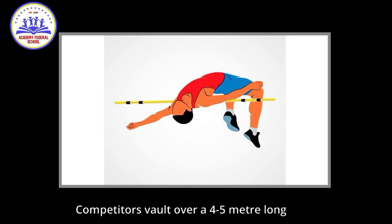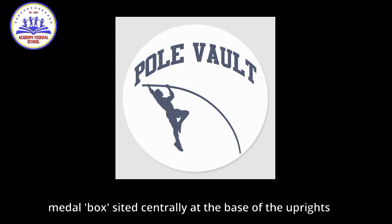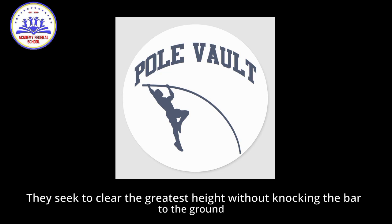Competitors vault over a 4.5-meter long horizontal bar by sprinting along a runway and jamming a pole, usually made out of carbon fiber or fiberglass, against a stop box at the back of a raised six-meter box site centered at the base of the upright. They seek to clear the greatest height without knocking the bar to the ground.